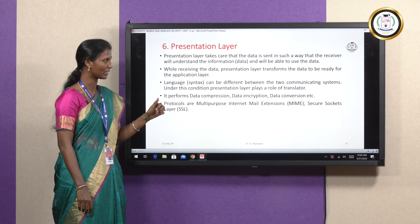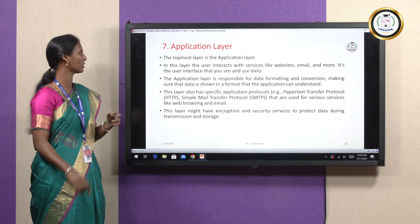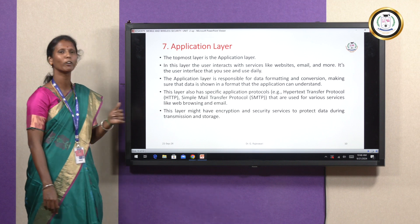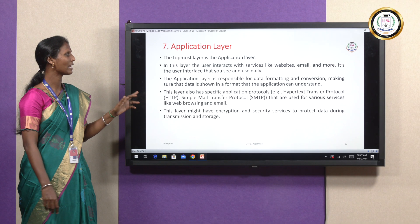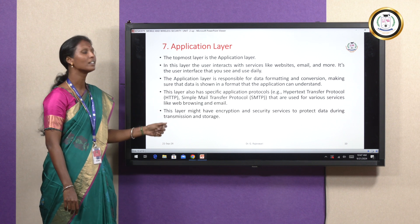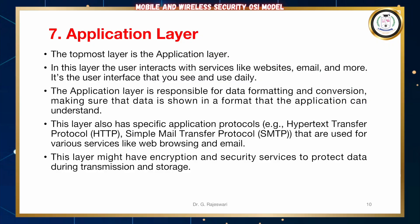Protocols include Multipurpose Internet Mail Extension (MIME) and Secure Socket Layer (SSL). The Application Layer is the seventh layer and the topmost layer. In this layer, the user interacts with services like websites, emails, and more. It is the user's interface that you see and directly use. The application layer is responsible for data formatting and conversion, making sure that the data is shown in a format that the application can understand. This layer also has specific application protocols — for example, Hypertext Transfer Protocol (HTTP) and Simple Mail Transfer Protocol (SMTP) — used for services like web browsing and email. This layer might also have encryption and security services to protect data during transmission and storage.